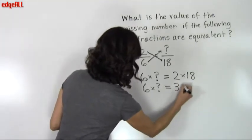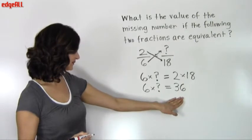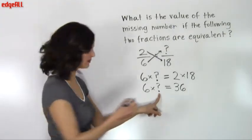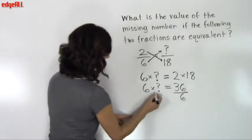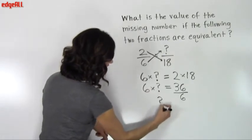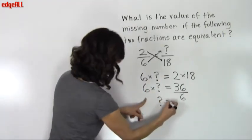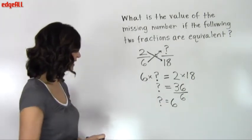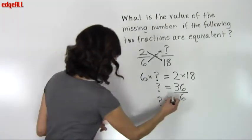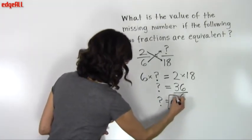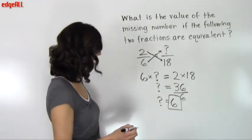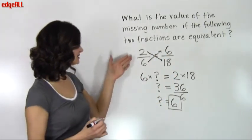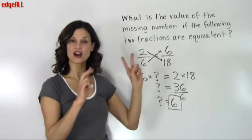I'll go ahead and do that calculation. So 6 times some number equals 36. We know that in order to find that number, we need to divide 36 by 6. So our question mark equals 36 divided by 6, which is 6. I can take the 6 away from the left side, and the question mark equals 36 divided by 6. So the unknown numerator in our fraction is the number 6. Therefore, 2/6 and 6/18 are equivalent fractions.